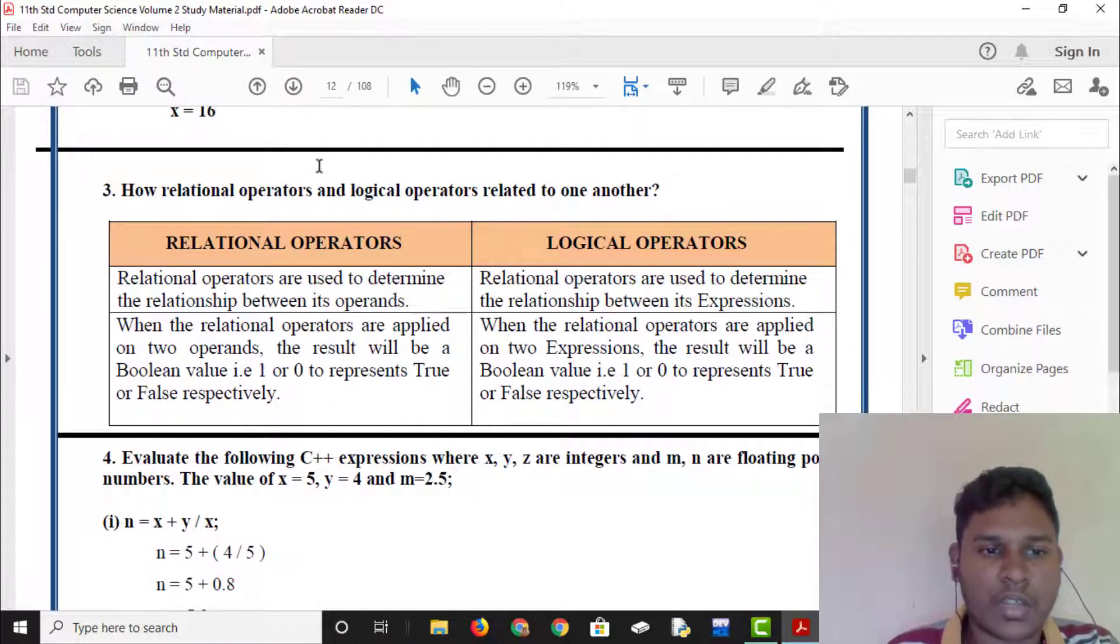Logical operator and relational operator related. Relational operators are used to determine the relationship between its operands and logical operators are used to determine the relationship between its expressions. When the relational operators are applied on two operands the result will be the boolean value 1, 0 to represent the false and true respectively.